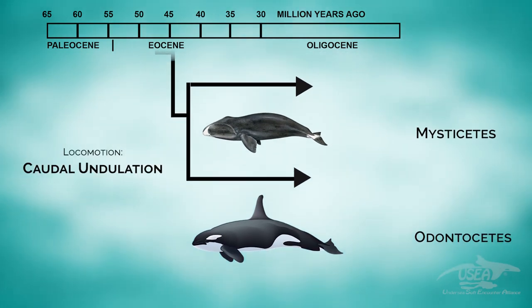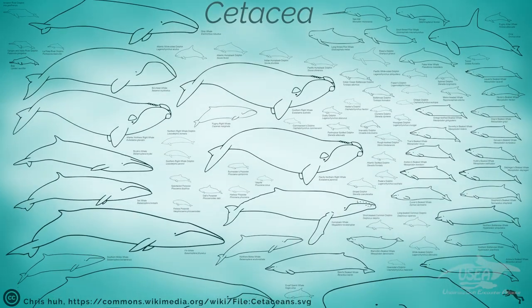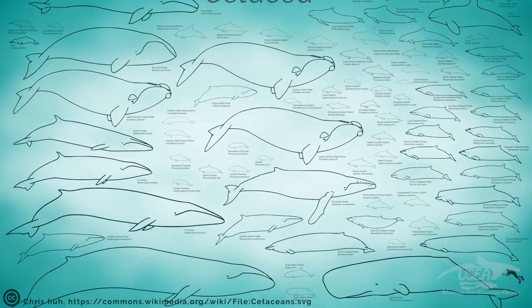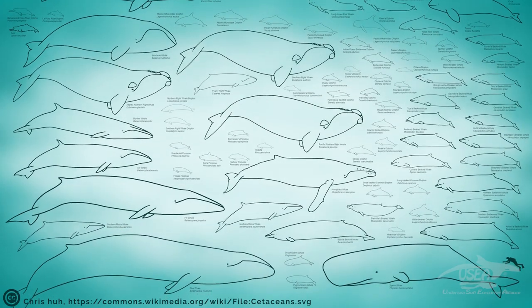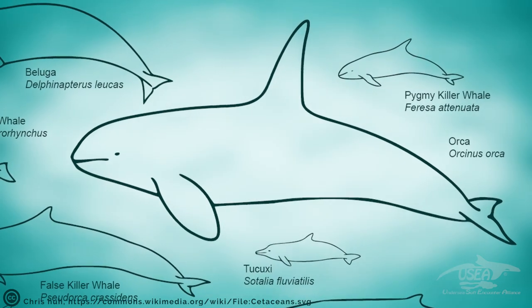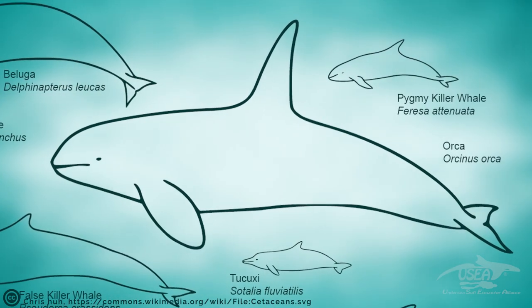They use caudal undulation for moving. Coming from this single ancestor called Mesonyx, we have today more than 60 different species of Cetaceans. The Mysticetes are the baleen whales — they filter the water and eat krill, or like humpback whales, also herring. The Odontocetes have teeth. Among the Odontocetes, we now have orcas. But evolution is not a static system, and the mutations are really small changes, generation after generation — not visible from one generation to the next, but over a long range of time we can see differences in the body.